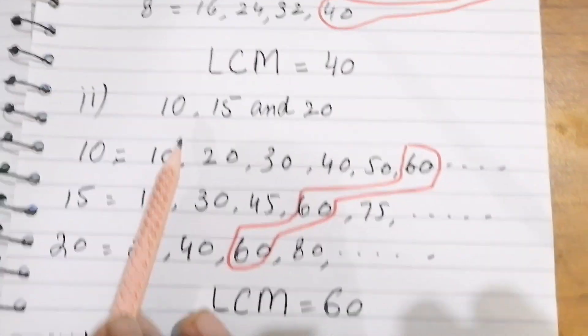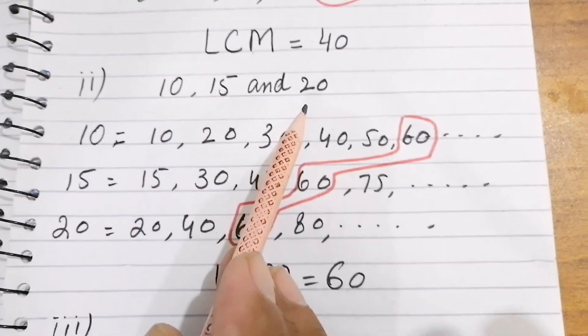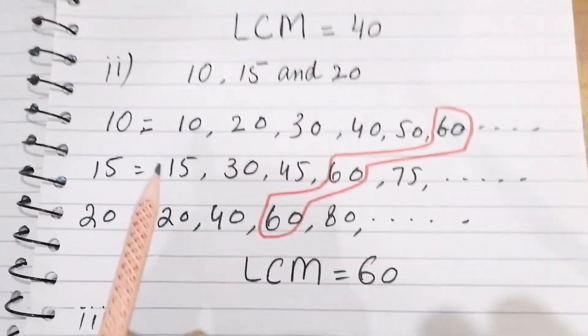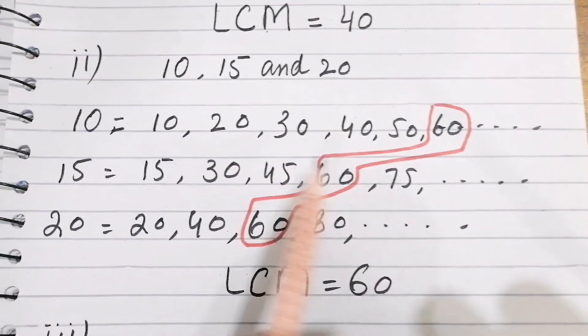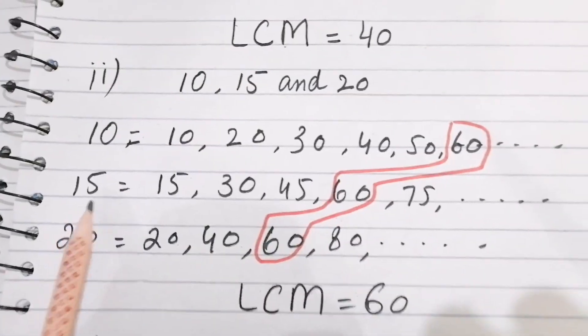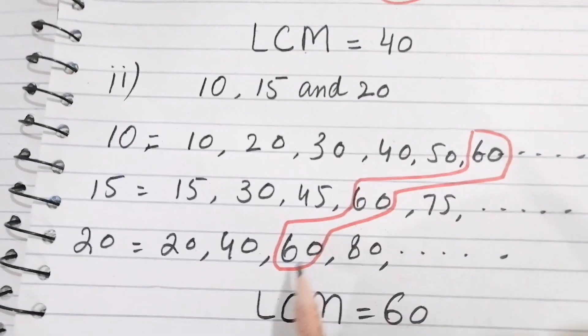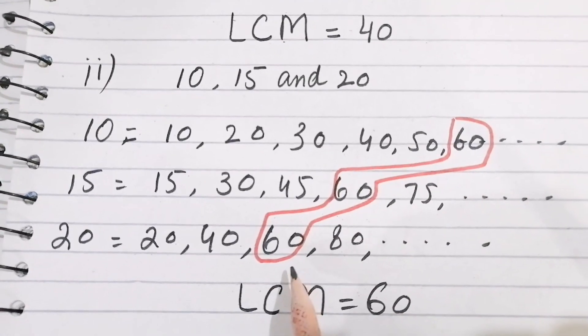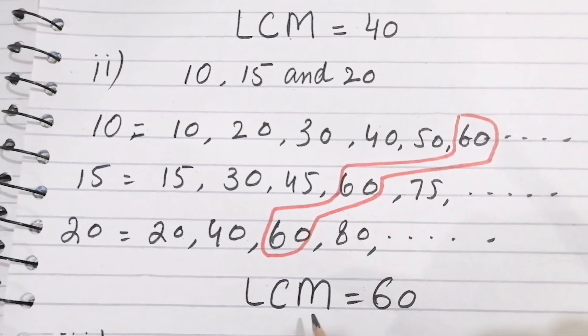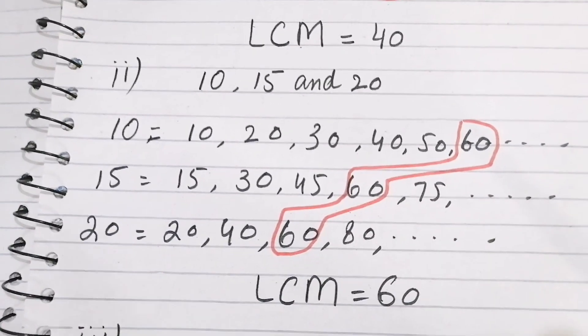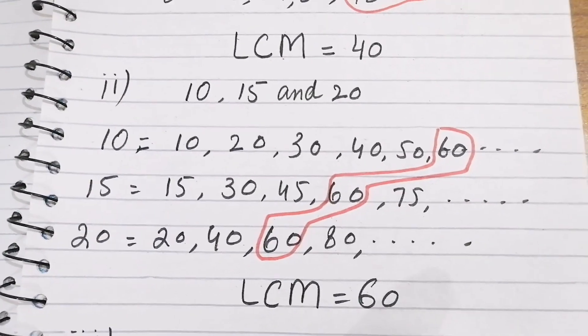The second part is 10, 15, and 20. Taking multiples of 10, 15, and 20, the number 60 is common, so the LCM will be 60.